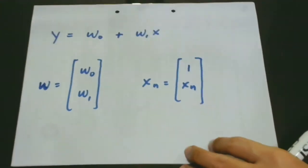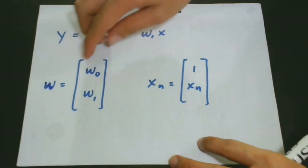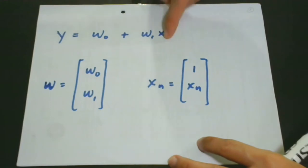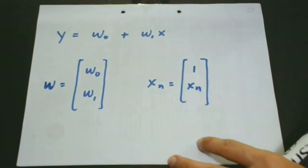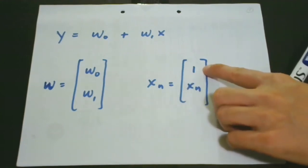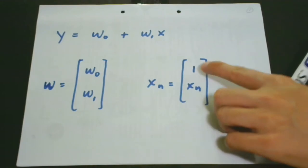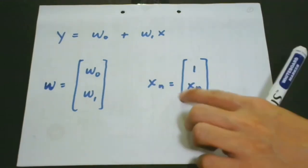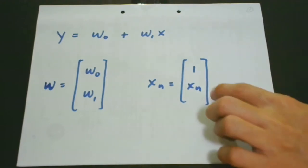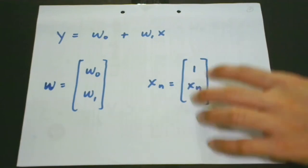Now that we are done with the two parameters, let's work on x. We are going to create vectors xn by augmenting each xn with a 1. So xn is equal to 1 followed by xn. We've added 1 for each xn. Later we will have more discussions, especially when we have more entries. This is our second step.